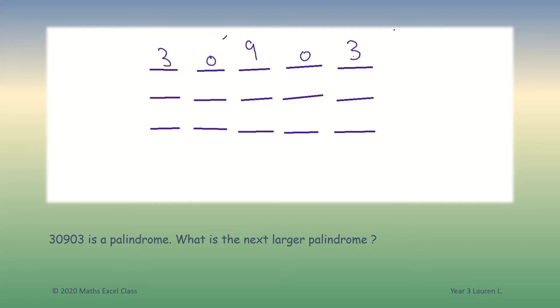So that means this number is the same from left to right and right to left. Our first attempt to make the next larger palindrome could be adding the third digit by one. But this would become 3-0-10-0-3, and this number is not palindromic, so this one will not work.